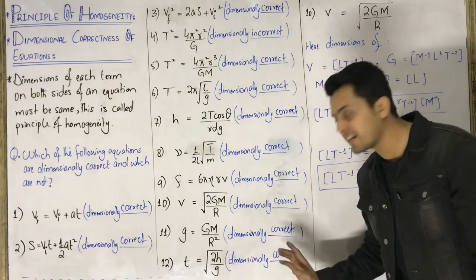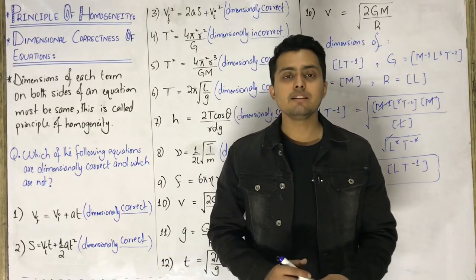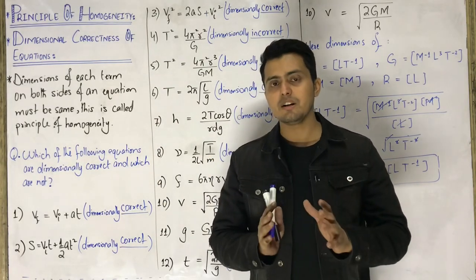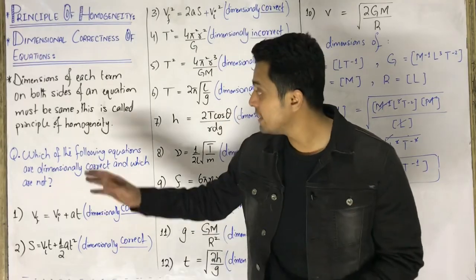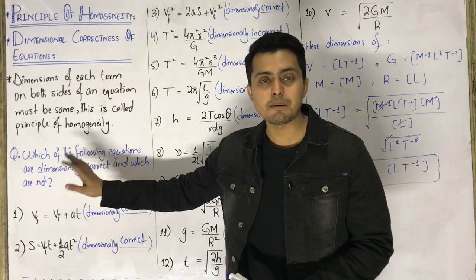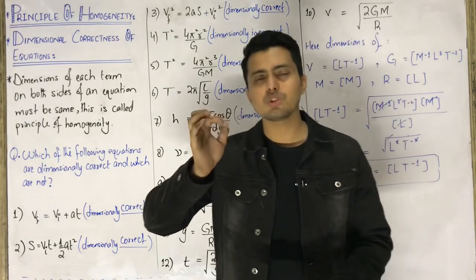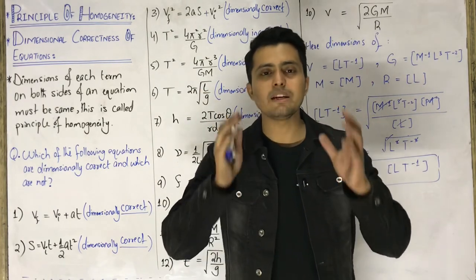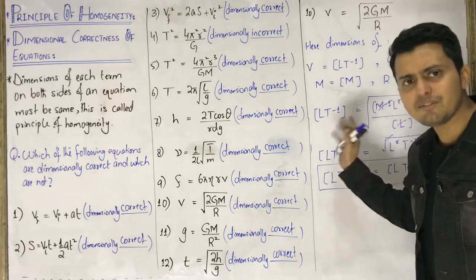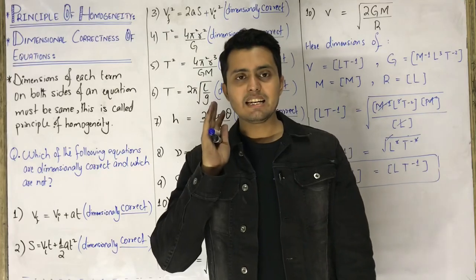So in today's second video on dimensional analysis, we discussed the principle of homogeneity — learned and understood what it is — and then solved the main part: proving which equations are dimensionally correct and which are not. We practiced with 12 equations. The method I've taught you can be applied to any physics equation you encounter.